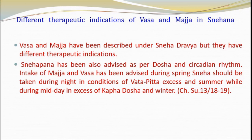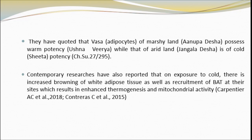Selection of specific types of Sneha Dravya such as Vasa and Majja as per season and Dosha might indicate circadian rhythm in fat metabolism. Recent studies have also proven that enzymes involved in fat metabolism behave differently as per circadian rhythm. Diurnal variations in metabolites of fatty acids, steroid hormones, acylcarnitine, glycerophospholipids and sphingolipids have also been reported. Recent studies on adipose tissue have also reported that adipocytes present in different parts of the body have peculiarities in terms of functions and response to environmental cues.